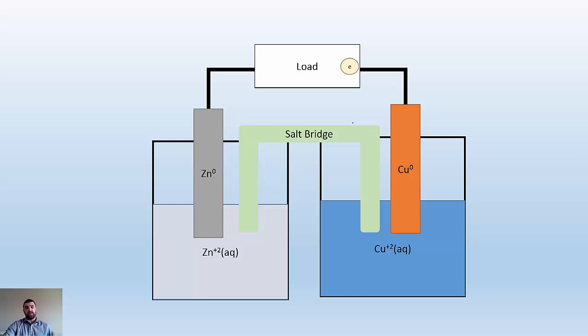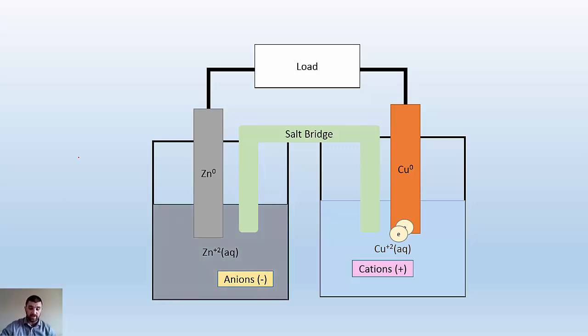Taking a look at a voltaic cell, the classic zinc-copper voltaic cell, zinc will lose its electrons to the copper ions and reduce them. The anions will go across the salt bridge, and the cations will do the same but towards the cathode. The copper is going to get used up, so its concentration is going to go down. On the zinc side, the concentration is going to go up because we're making more zinc ions.